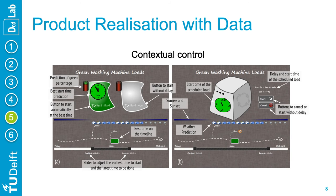Our final intervention was around contextual control — letting the washing machine run at the greenest time within a set of parameters automatically. For this prototype, focused on time once again, we offered participants the ability to set an earlier start time and a latest finish time.